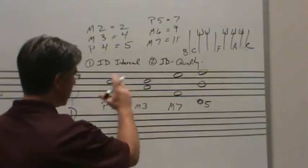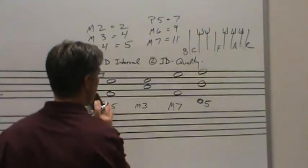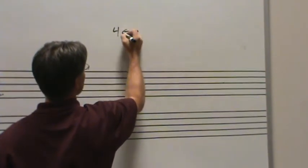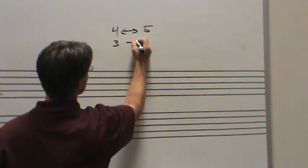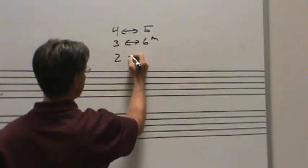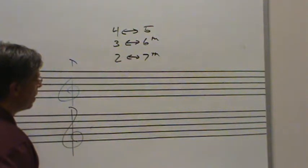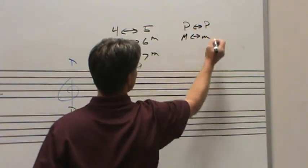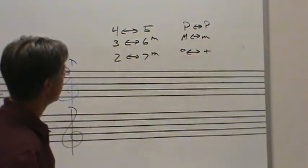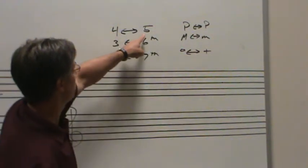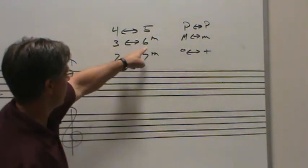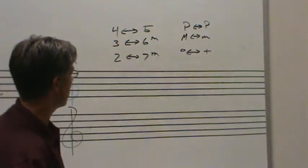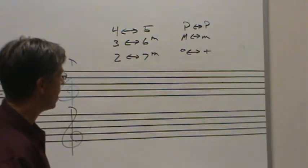Then the last step is to take intervals that we've identified and invert the intervals. You should know at this point that when intervals invert, fourths invert to fifths and vice versa. Thirds invert to sixths and vice versa. Seconds invert to sevenths and vice versa. From a quality perspective, perfect inverts to perfect, major inverts to minor, diminished inverts to augmented. So, a perfect fourth inverts to a perfect fifth. A minor third inverts to a major sixth. A diminished fifth would invert to an augmented fourth. A major seventh would invert to a minor second. And so on. That's the last part of the test.